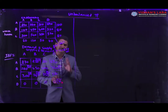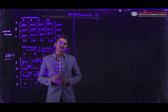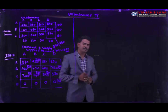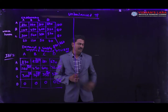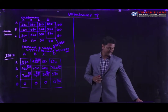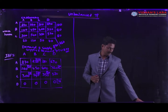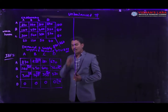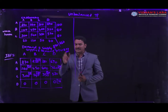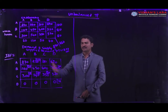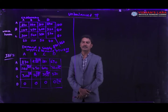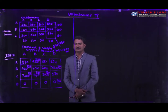We have three methods to calculate the initial basic feasible solution: those are the North-West corner method, Vogel's approximation method, and the least cost entry method. Vogel's approximation method is the best method compared to the remaining methods. I will solve this problem using Vogel's approximation method.